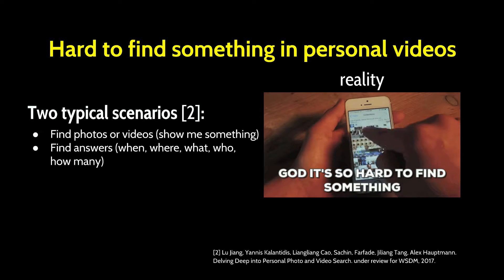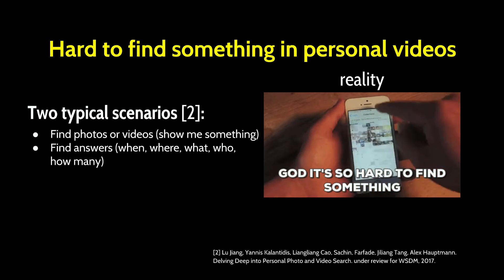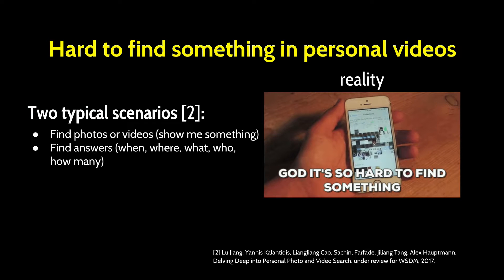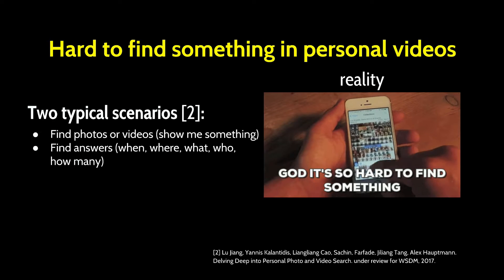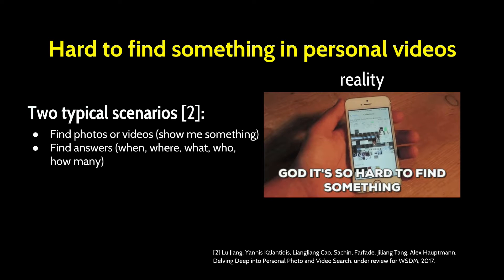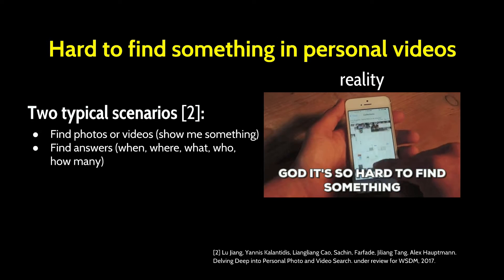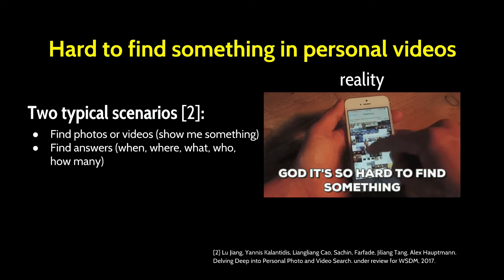According to a recent study on Flickr, there are two typical scenarios in which users intend to search their personal photo and video. Users are not only interested in finding video about a specific topic, but also seek answers extracted from the content of the photo or the video. For example, a user may ask a question like, "What's the name of that amazing hotel in our last trip to San Francisco?"